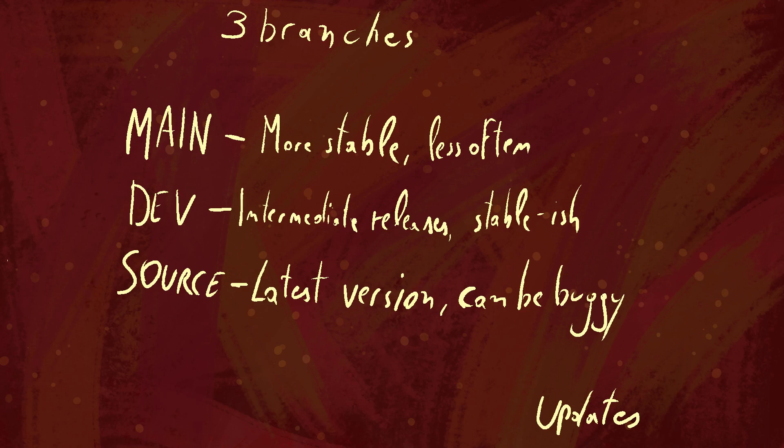Then there's the dev branch, which provides periodic updates with some unstable features that are going to be added to the next main version. It's still in development, but it should be stable enough. And finally there's the source branch, which is the most unstable — the nightly builds — kept up to date with the current Castagne source and as such can be pretty buggy, but you have this option if you want it.